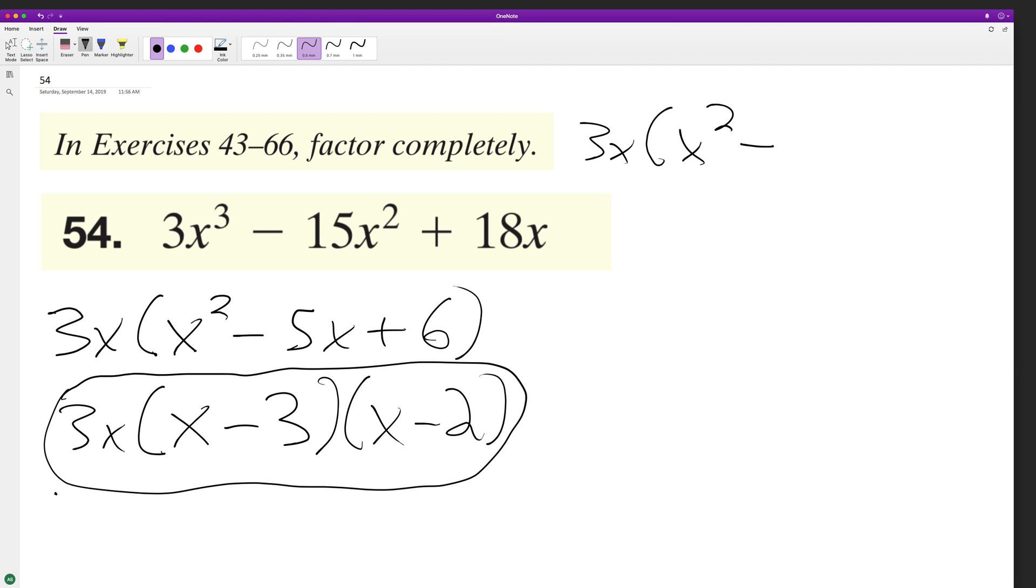So we end up with X squared minus two X minus three X plus six. Combine these, we get minus five X. Multiply through by the three X: three X cubed minus 15 X squared and then plus 18 X.